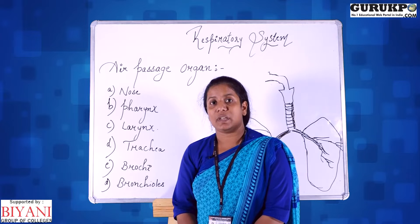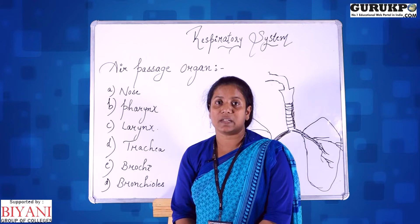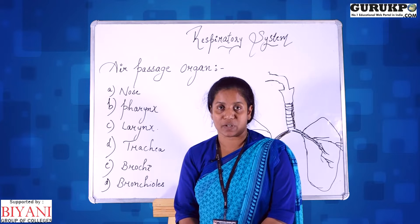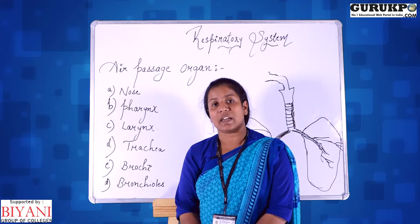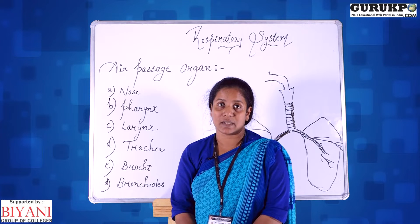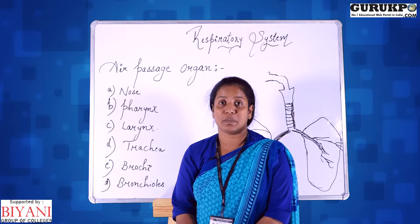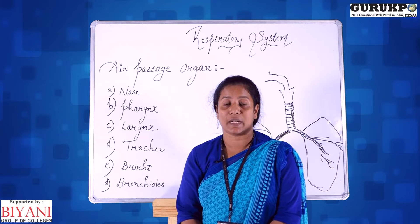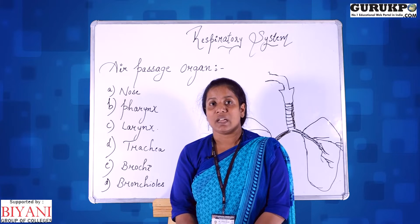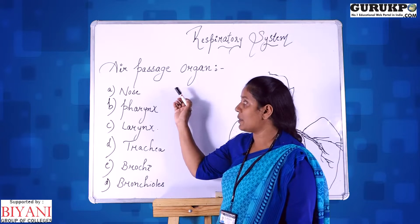The respiratory system includes respiration, that is the exchange of gases. There are two phases in respiration: external respiration and internal respiration. In external respiration, air is collected from the outside environment and taken into the lungs. In internal respiration, there is an exchange of gases between blood and tissues, where blood gives up carbon dioxide into the tissues.